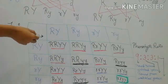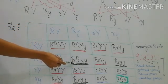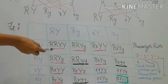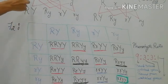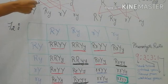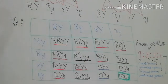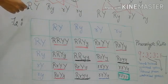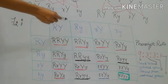Mendel found 4 types of offspring: round yellow, wrinkled yellow, round green, and wrinkled green. Round green and wrinkled yellow are new combinations. Mendel concluded that the factors — what we now call genes — of each character or trait are independent of each other. Capital R (round) can combine with capital Y (yellow) or small y (green) independently. Through these gametes, characters were passed to offspring. Thus Mendel concluded his dihybrid cross and the law of independent assortment.